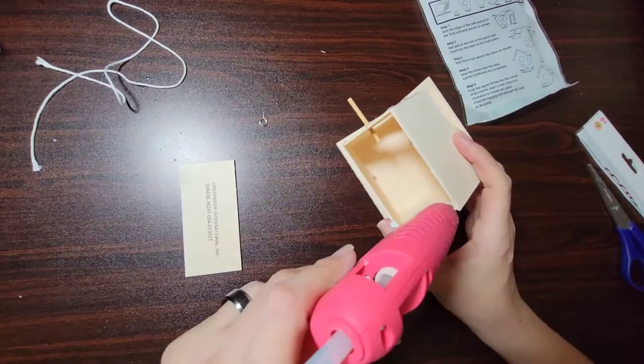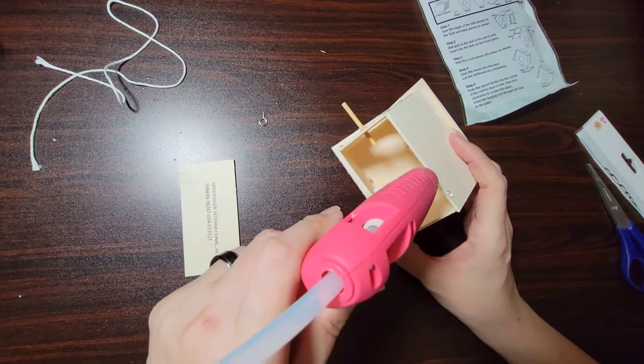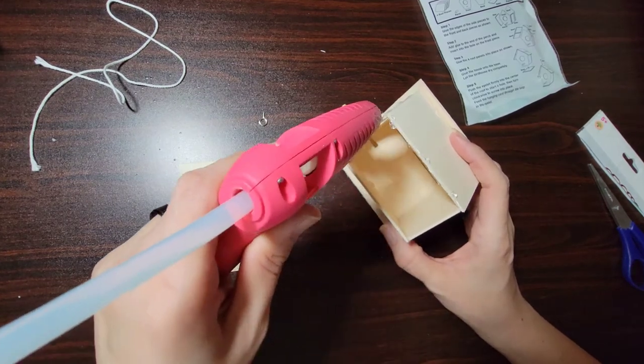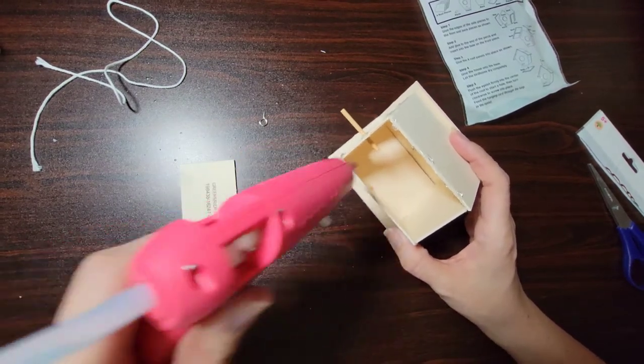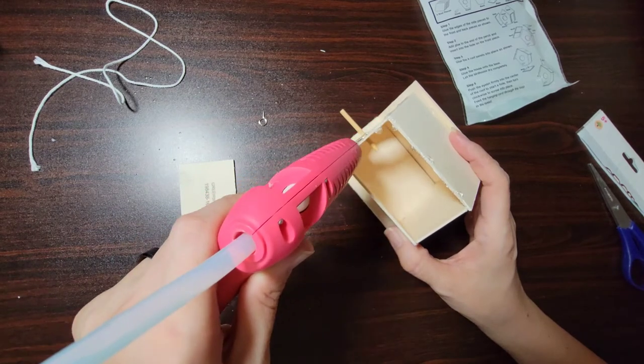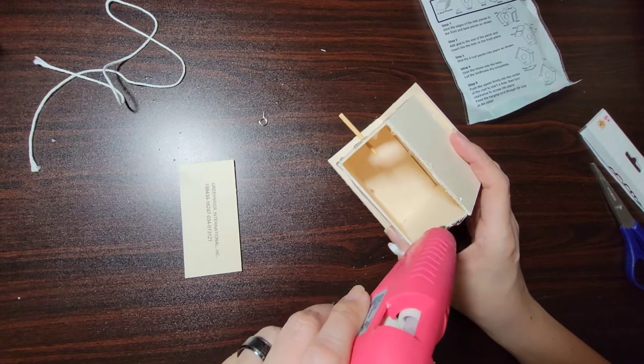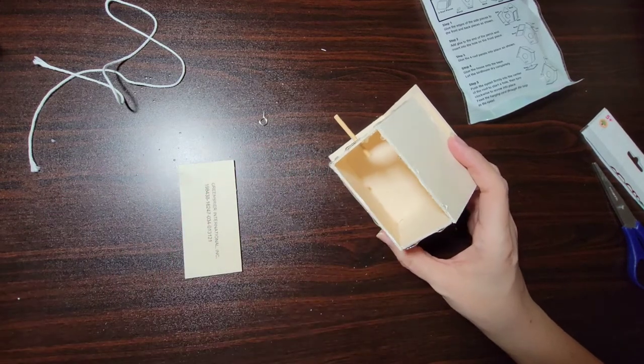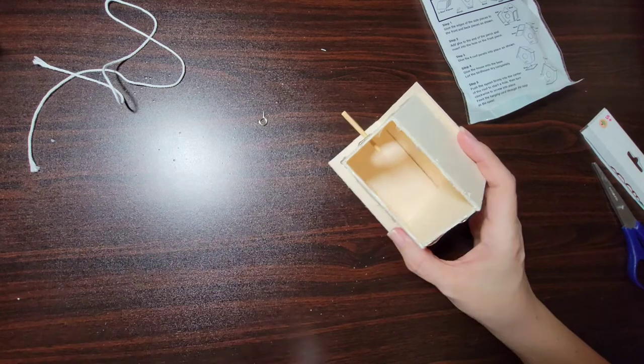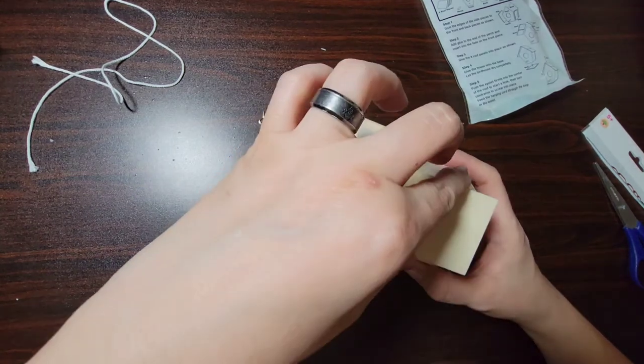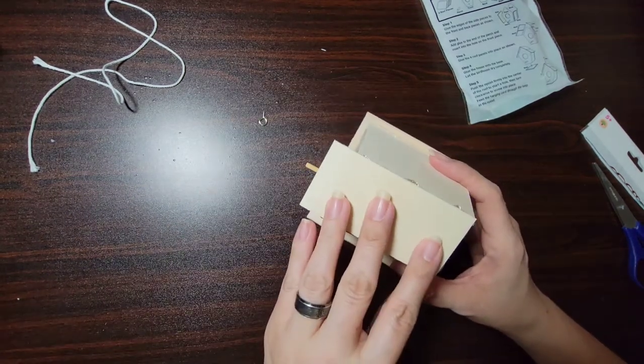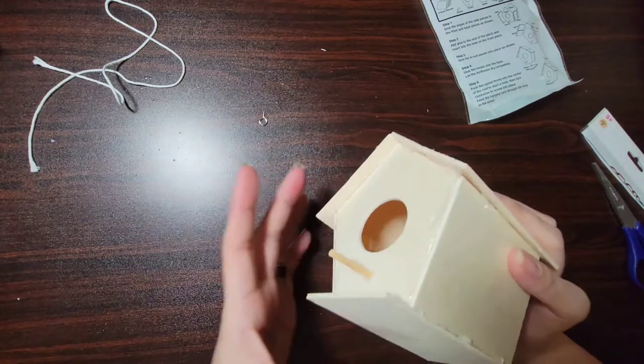Okay, so now we're going to just continue to go around the perimeter of this little birdhouse, trying to go as fast as I can that way it doesn't dry too fast. Like I said, I'm going to put it somewhat flush on the back part of that.